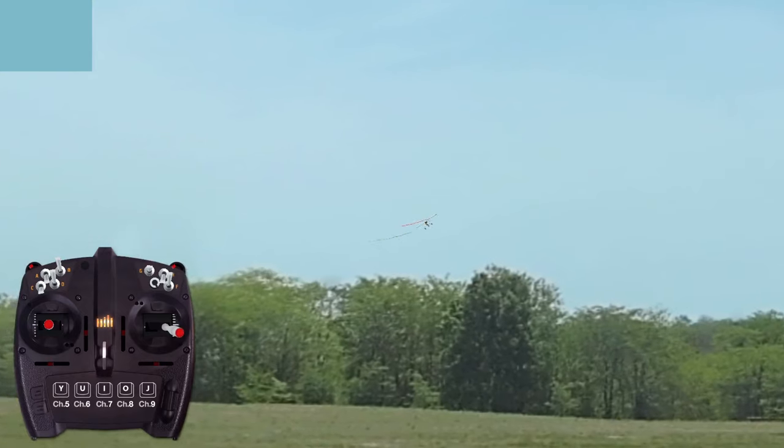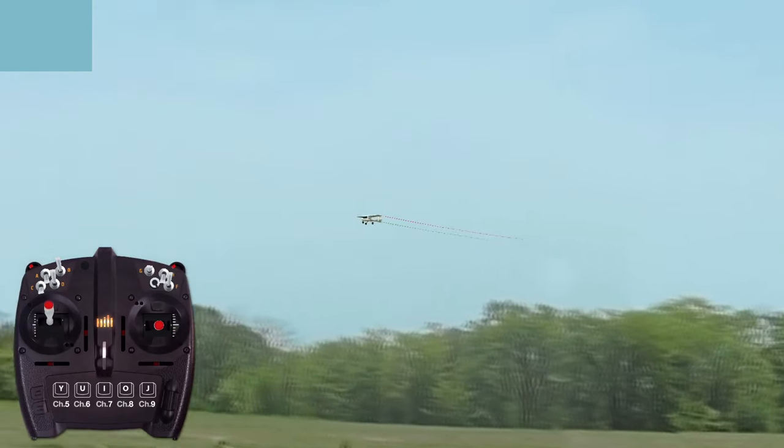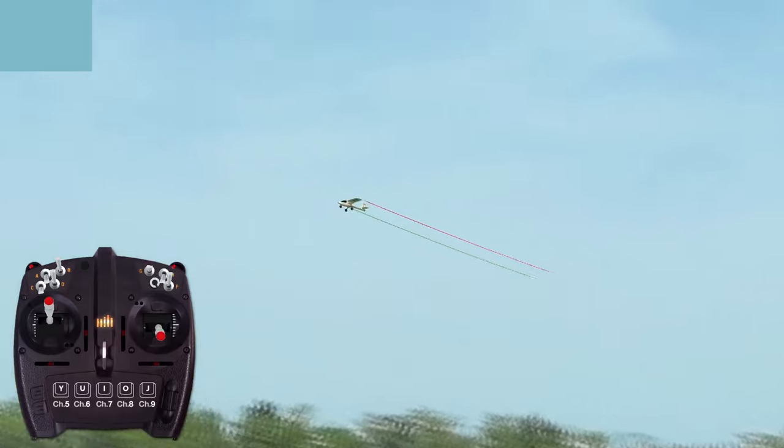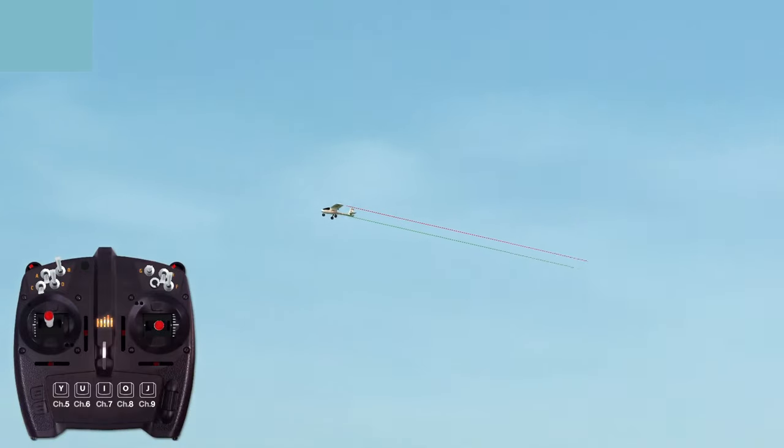Climbs, level flight, and descents are primarily controlled using the throttle, with the option to use the elevator pitch control to make gradual attitude adjustments. When the throttle is set for level flight at half throttle, the plane will then return to level flight as soon as the elevator is neutralized.